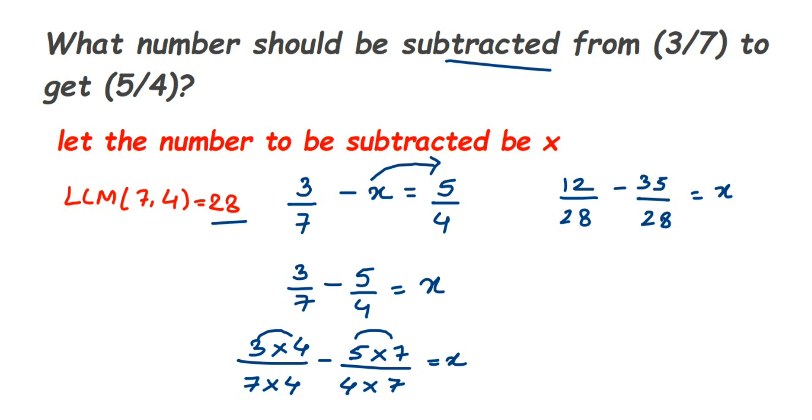Now you can see that denominators are same, then you just simply subtract the numerators. So it will be 12 minus 35 over 28 is equal to x. Now subtract these two: you will get minus 23/28 is equal to your x.